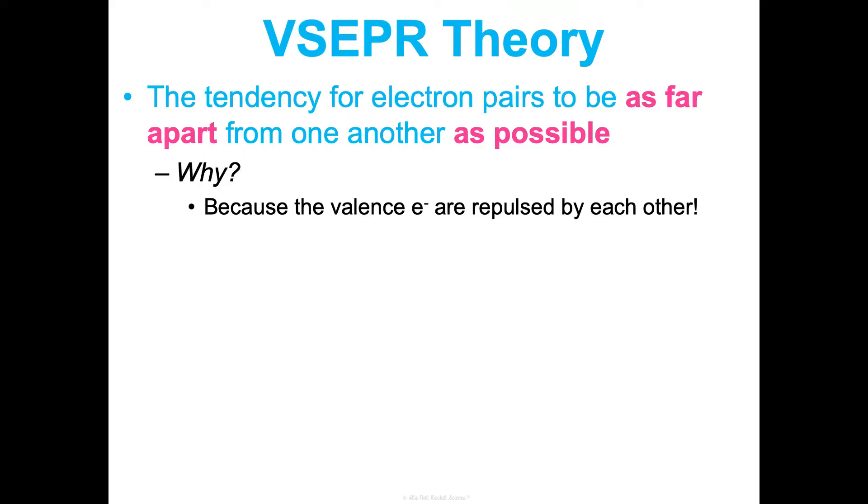So the VSEPR theory, which is also known as the electron domain theory, or VSEPR just stands for the valence shell electron pair repulsion theory. So VSEPR is a little bit easier to say. It's just the tendency for electron pairs to be as far apart from one another as possible. And why do they do that? Because the valence electrons are repulsed by each other. Remember, like charges repel. They don't want to be near each other.